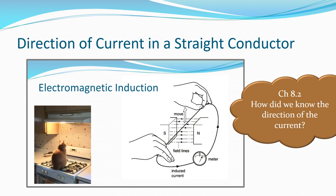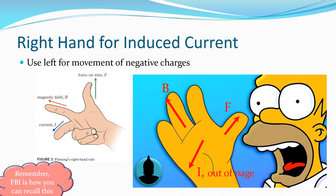Going back to some 8.2 revision: we had the scenario where a wire moves through a magnetic field. The field runs from north to south, and the wire moves perpendicular to it. There's the hand rule — we can work out which way the induced current's going. There's the three-finger rule with FBI (force, magnetic field, current), and there's also the palm rule, which gives the same result.